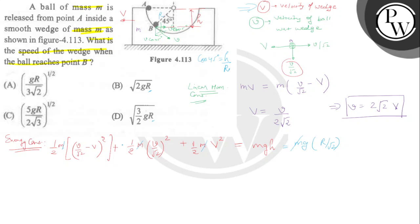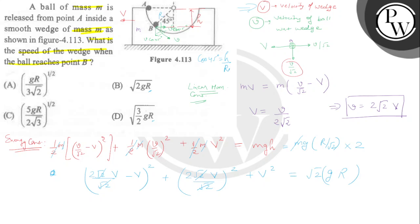We substitute small v = 2√2·V and simplify. Putting it in: (2√2·V / √2 − V)² + (2√2·V / √2)² + V² = gr·√2. After expanding and simplifying, we get 6V² = gr·√2.